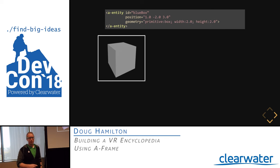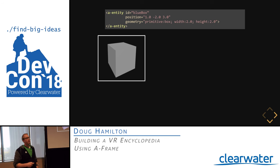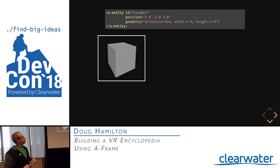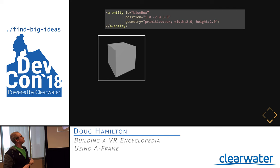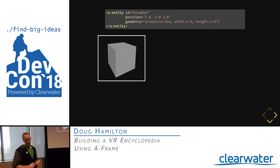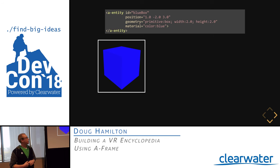Next, we add a geometry component by adding another attribute called geometry. Since the geometry component takes multiple properties, A-Frame follows the inline CSS style syntax — key-value pairs separated by semicolons. We set the primitive to 'box' and width and height properties to 2.0, and now our entity has a visual representation in the scene. Finally, we add a material component and set the color property to 'blue'. Now we've represented our blue box entity with the correct behavior we wanted.